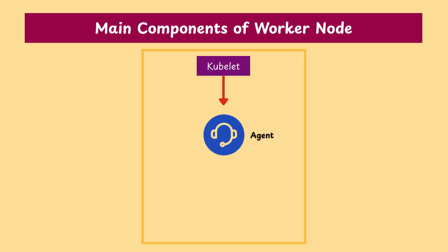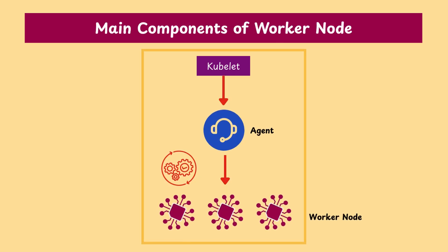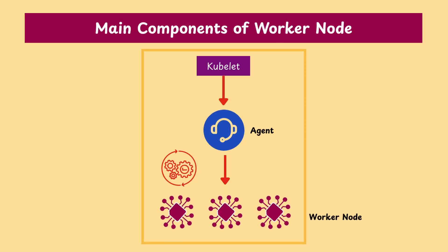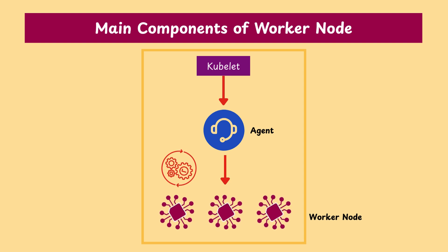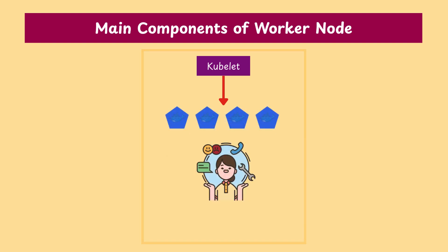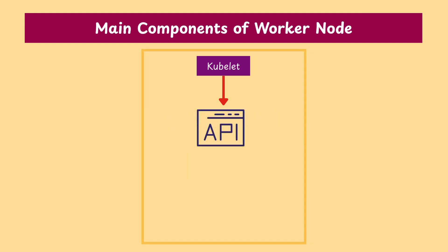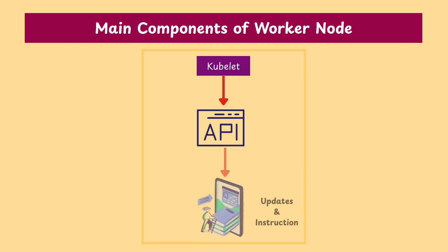Kubelet — this is the agent running on each worker node. It ensures that the containers in each pod are running and healthy. It talks to the API server to get updates and instructions.